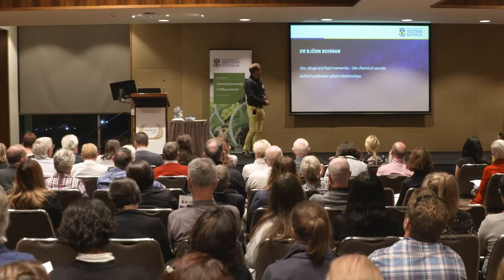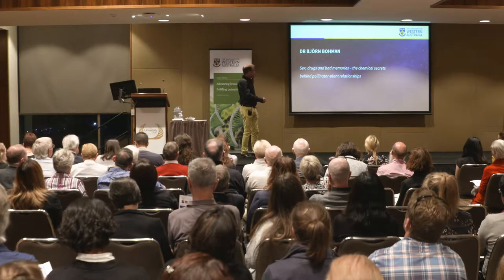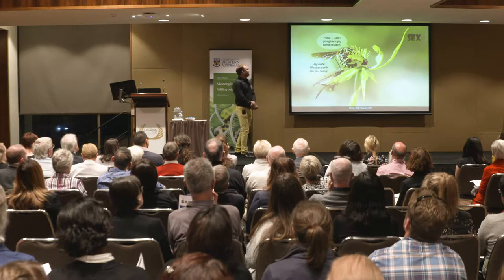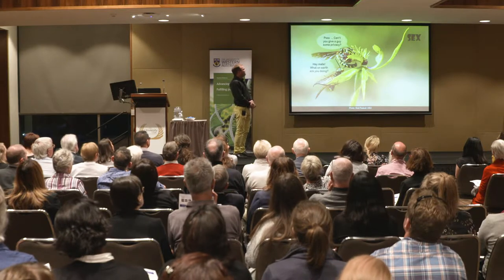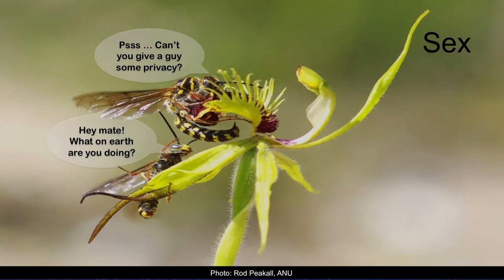Here we can see the Western Australian spider orchid. This flower is using the same compounds to attract the pollinators as the females of the wasps use to attract the males. That's sexual deception.